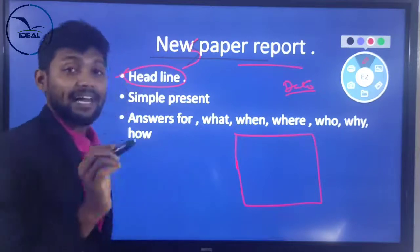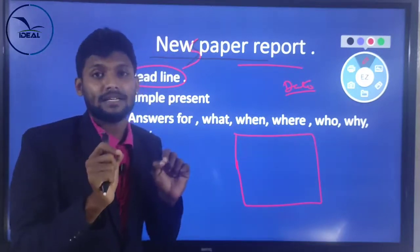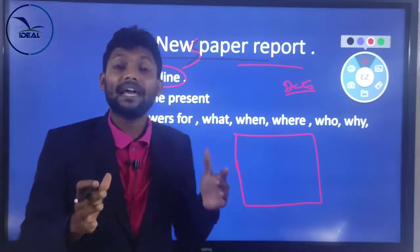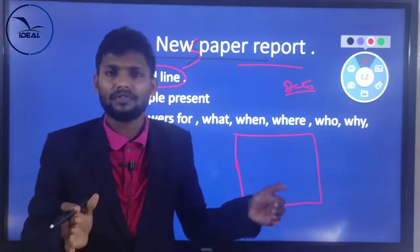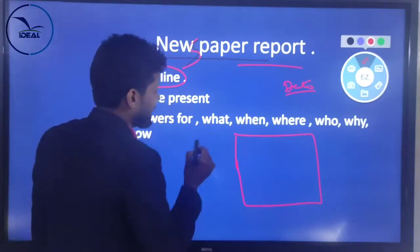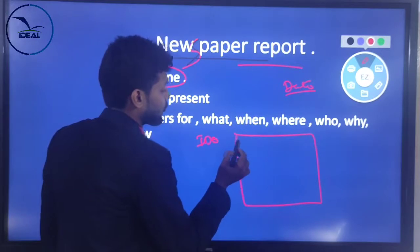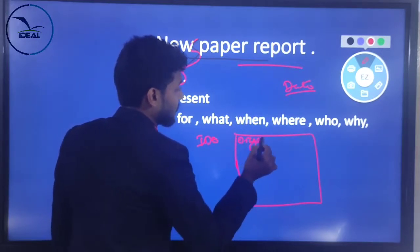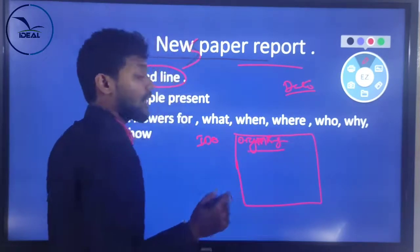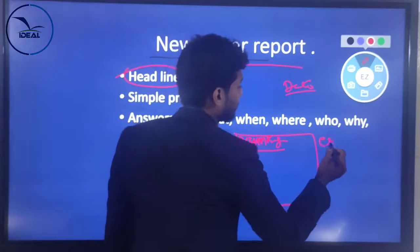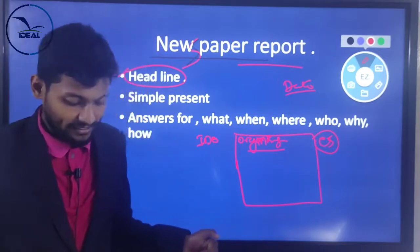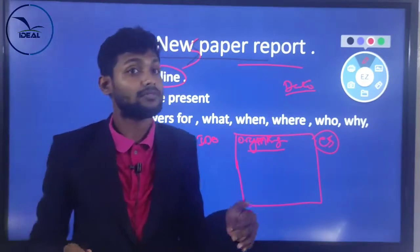When you write a heading, always use simple present tense. Simple present means, even though the program is over - for example, we conducted an international webinar - the next day after the program there was a report in the newspaper. So you will write something like 'ITL International Institute organizes a program.' The 'organizes' means S-form, that is simple present: comes, goes, okay.